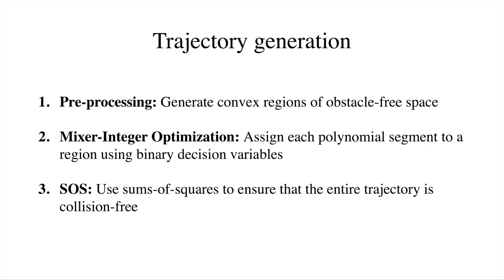The approach to generating collision-free trajectories can be split up into three steps. First, the entire space is divided into smaller convex regions which are guaranteed to be obstacle-free. Second, mixed integer optimization is used to assign each polynomial segment to a region using binary decision variables. And third, sums of squares constraints are used to ensure that the entire trajectory is collision-free.